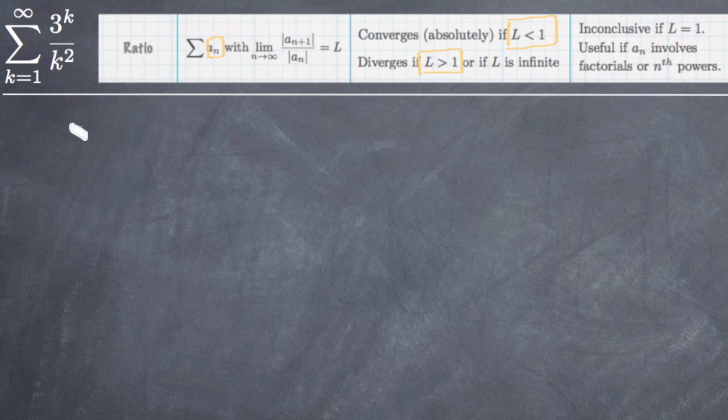So to use the ratio test, we're going to say the limit as k goes to infinity of 3 to the k plus 1, again we're plugging in k plus 1 everywhere we see the variable k, divided by k plus 1 squared.